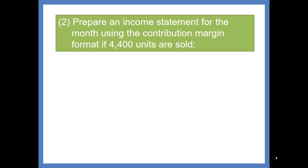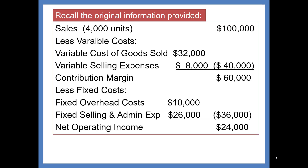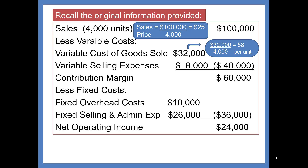Now prepare a Contribution Margin format Income Statement for the month if 4,400 units are sold. Originally, 4,000 units are reflected in the sales and cost levels. To recompute at 4,400 units, we need the sales price per unit: $100,000 divided by 4,000 units equals $25 per unit. Variable costs must also be adjusted: Cost of Goods Sold was $8 per unit and variable selling cost was $2 per unit. Fixed costs will not change, so no per unit amounts are needed for those.